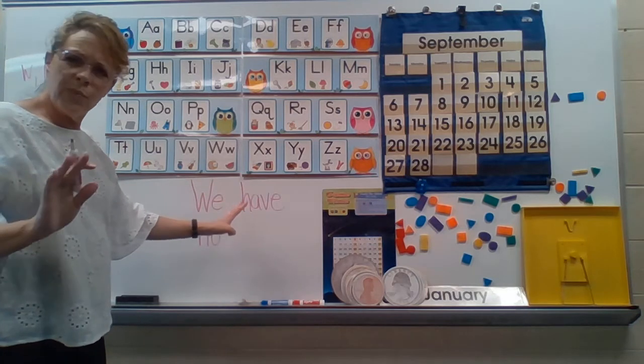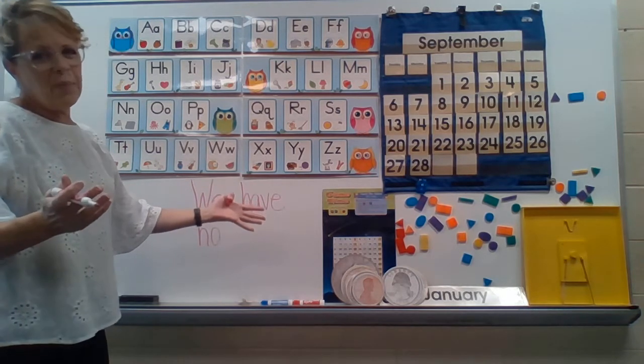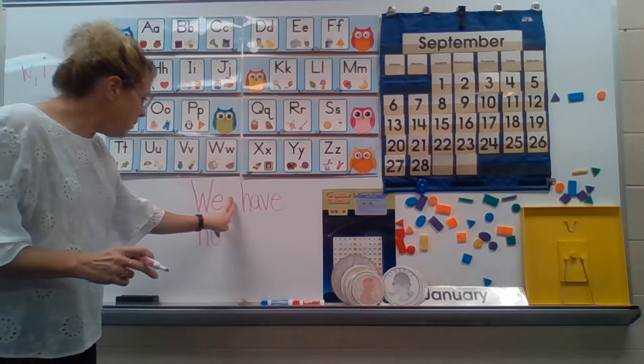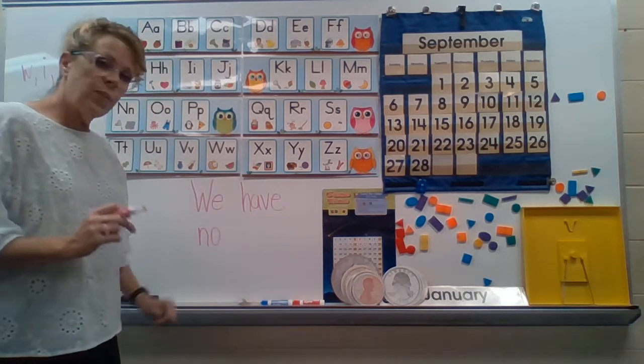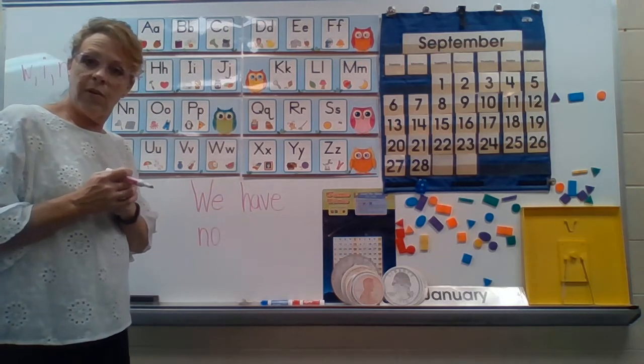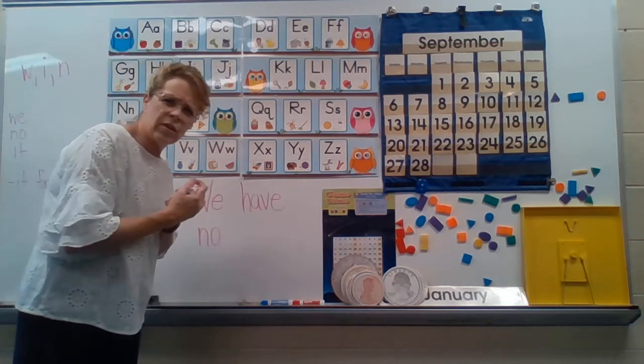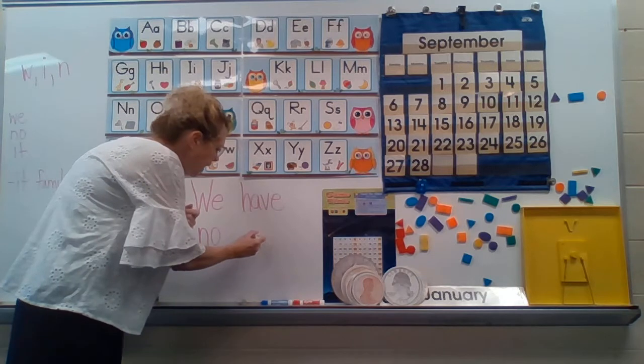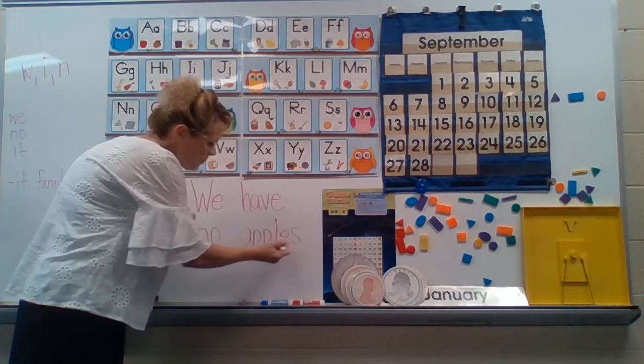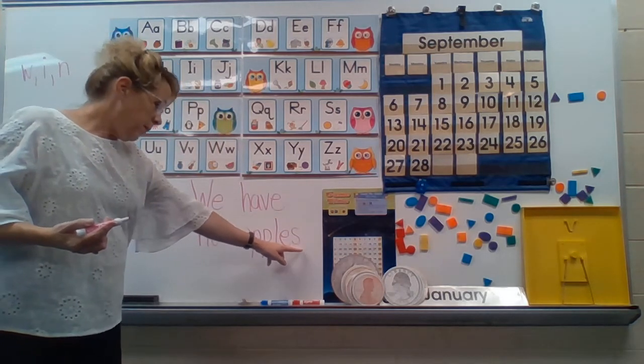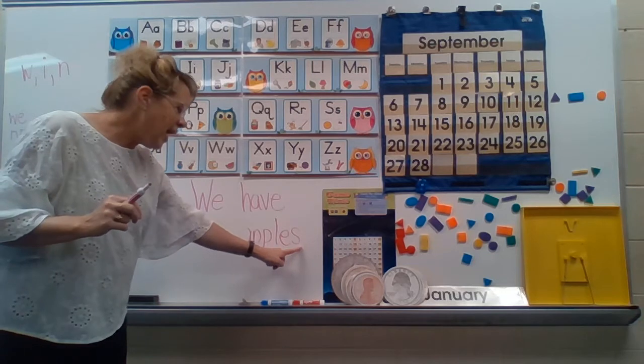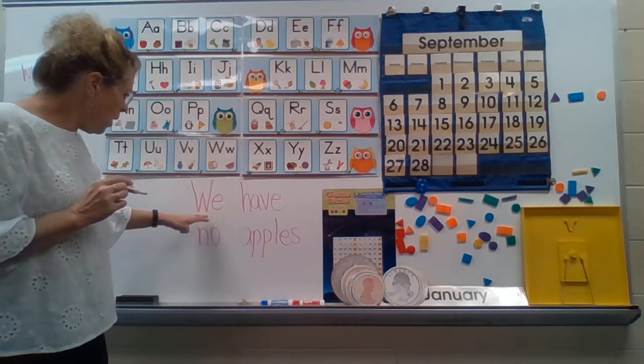We have no. Now, did I leave fingers back? I forgot to put my fingers down. But I'm much older than you, so I know how to leave that space without putting my fingers down. But you should put your fingers down and make sure you're leaving that really good space in between your words so people can read it. We have no apples. That's my fourth word. Apple starts with A, that short A sound. Apples. Whenever it's more than one, you add an S and that means more than one.